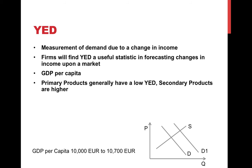However, secondary products — things like televisions, cars, stereos, and watches — are things that as income rises, people do buy a lot more of. So they tend to have a more elastic YED. If you could mention this distinction in your essay, it would show added depth and that you understand the concept well.